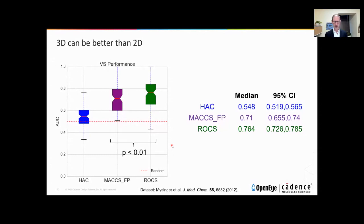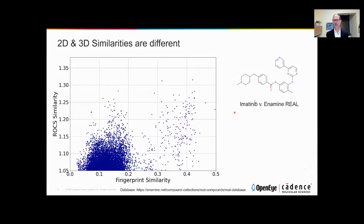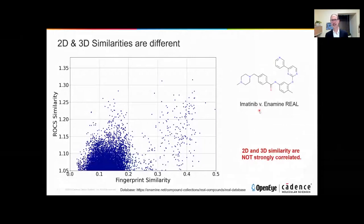Returning to our virtual screening problem and looking at 2D and 3D methods: if I plot 2D fingerprint Tanimoto on X versus the ROCS similarity on Y — which is a sum of two Tanimoto coefficients, one for shape and one for color, scaling zero to two — you can see that the fingerprint similarity and the ROCS similarities do not correlate. They're seeing different similarities between molecules. Here I'm using Gleevec, Imatinib, a well-known anti-cancer compound. This lack of correlation between 2D and 3D is quite interesting, and I'll come back to how we can exploit that to improve virtual screening performance.